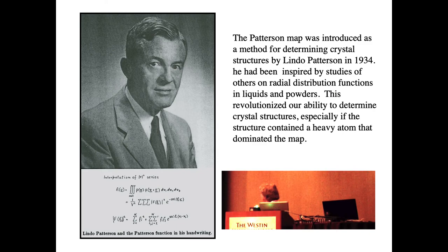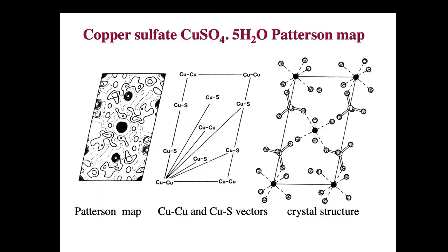And I'm sure all of you know the Patterson function map. Instead of using F's as in the electron density, you're using F squares. You don't have a phase problem. And you get a map which gives you the vectors between atoms. And if you have a heavy atom structure, of course, it's really nice. But for those of us who are puzzle solvers, even if you don't have a heavy atom, it's kind of fun to try and solve the structure.